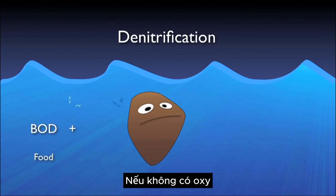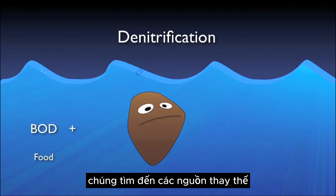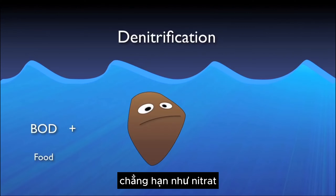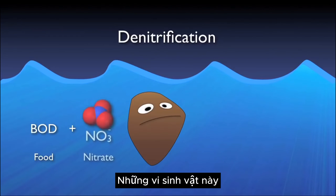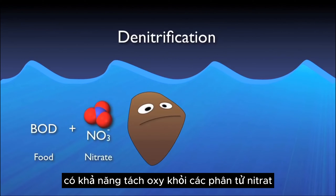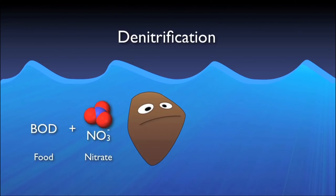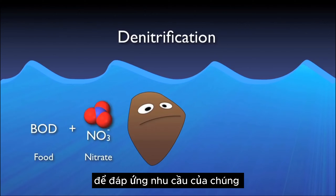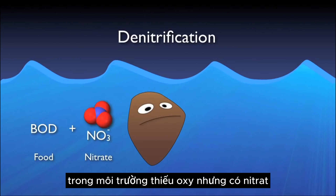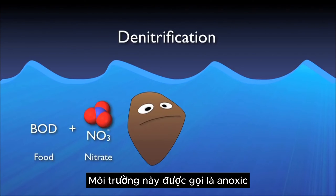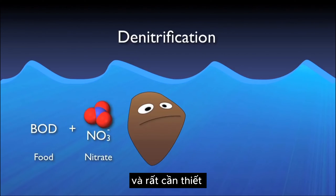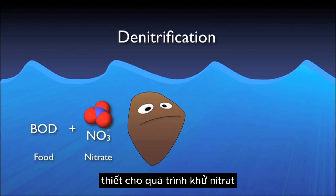If there is no DO present, however, they look to alternative sources, such as nitrate. These specialists have the ability to strip the oxygen from nitrate molecules to satisfy their needs. This critical environment where DO is not present, yet nitrates are, is referred to as anoxic, and is absolutely required for denitrification.